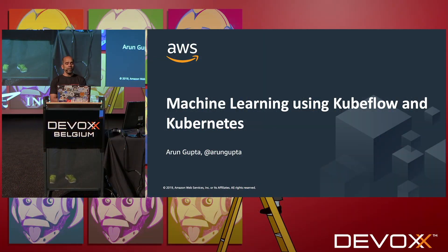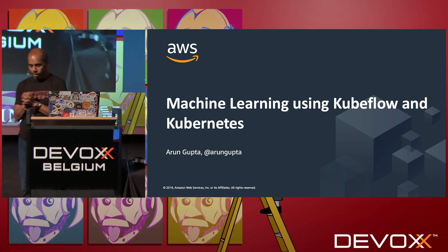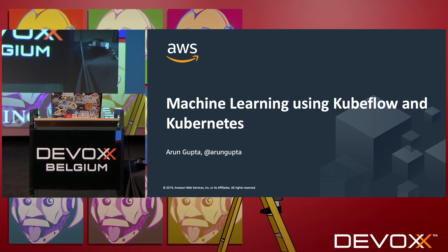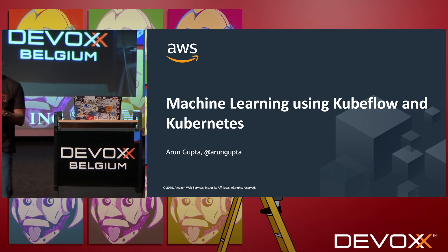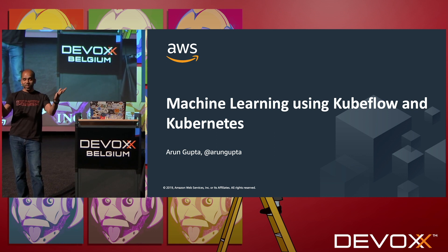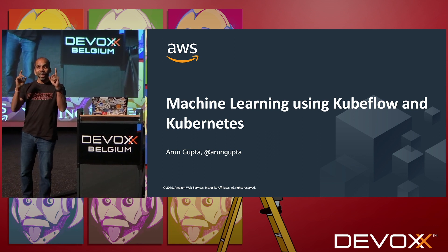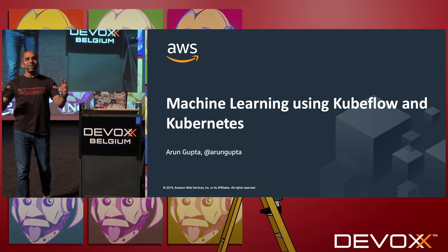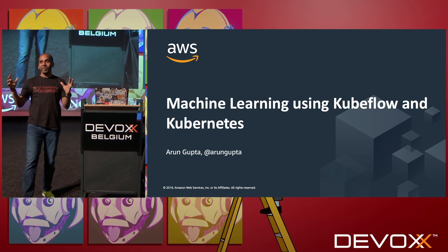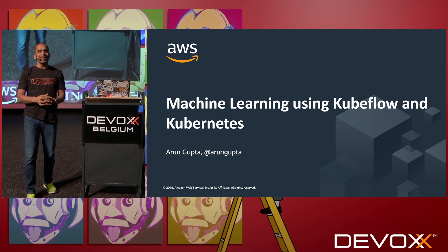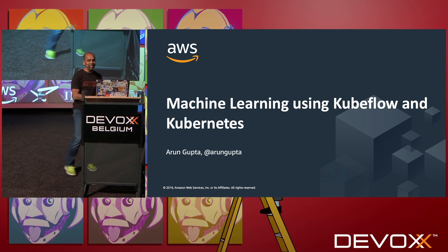All right, I think we are live. Thank you so much. My name is Arun Gupta and I work for Amazon. DevOps is known to have some of the finest speakers in the world and some of the best attendees in the world, just like you people. You are the best of the best, because you are staying Thursday evening right before food is being served. You are the best of the best audience, the nerdiest and the geekiest of all.